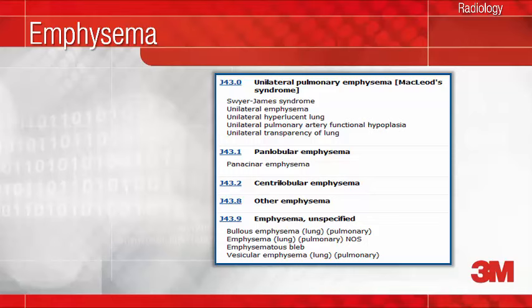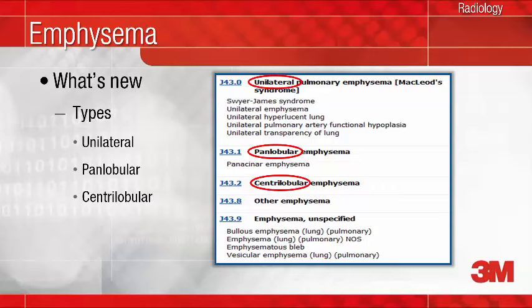Most types of emphysema were grouped into a single ICD-9 code. What's new in ICD-10? Separate codes are provided for specific types of emphysema. If you are able to determine the type of emphysema — such as panacinar, proximal acinar, centrilobular, and so forth — and document it accordingly, it will assure that a unique ICD-10 code for that condition can be reported.